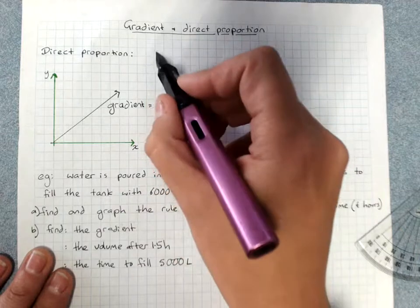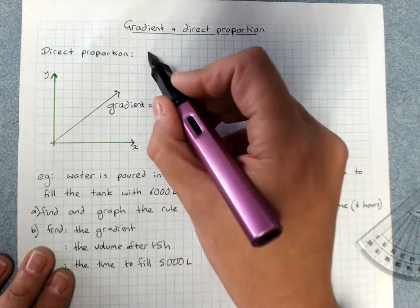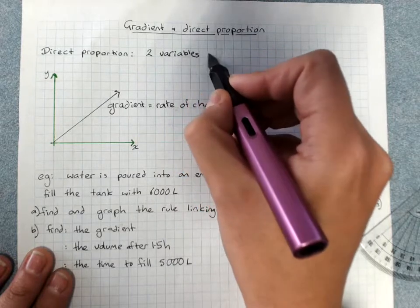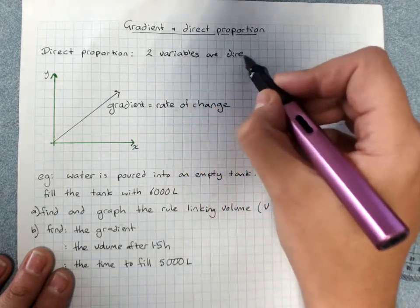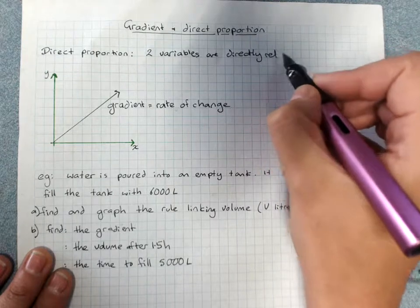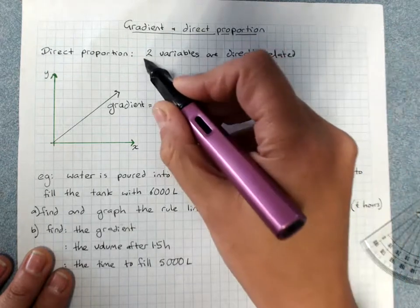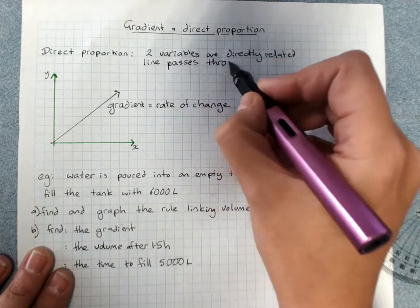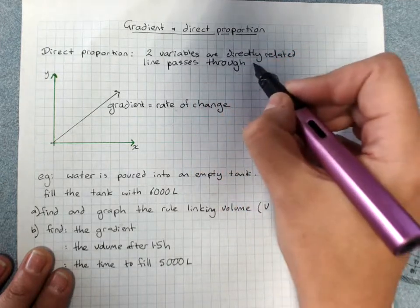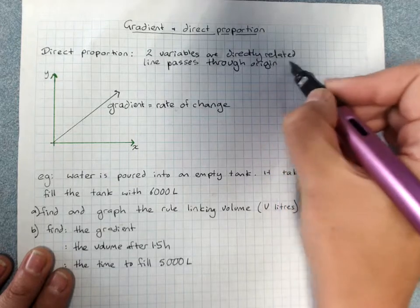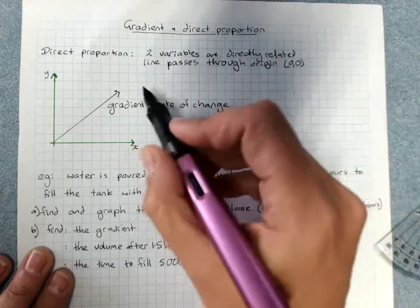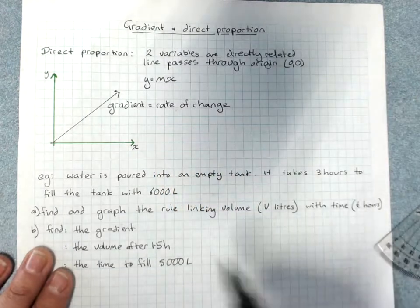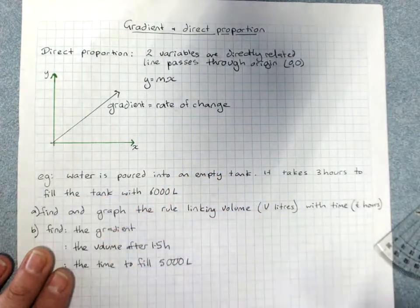Direct proportion must pass through the origin. Two variables are directly related, and the line passes through the origin. And so, because the line passes through the origin, the formula will be y equals mx. No plus b, because b, the y-intercept, is 0.